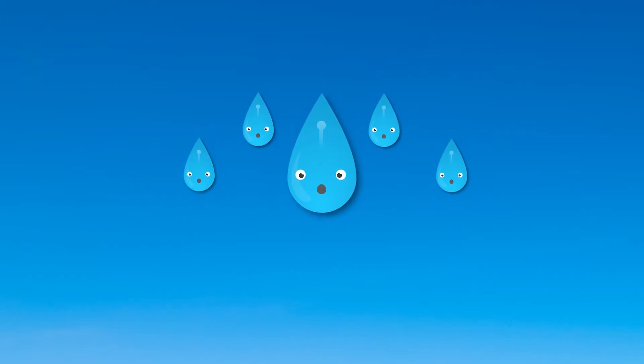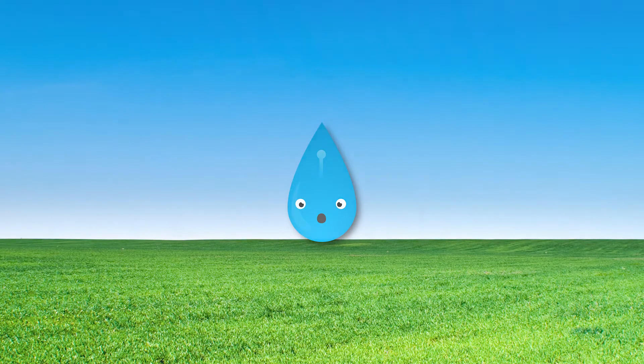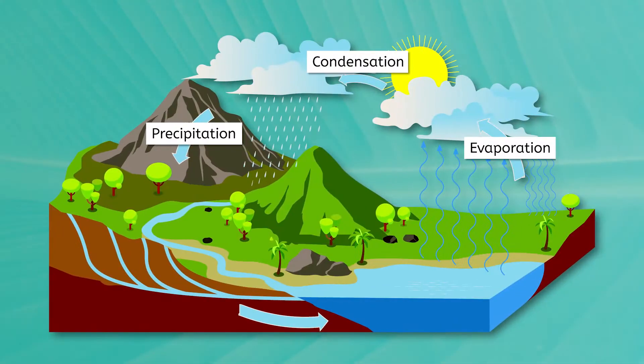First, she'll begin to cool down and join other vapor friends, forming a fluffy cloud. As the cloud becomes heavier, what do you think will happen? Mia, as well as many of her neighbors, may take the plunge back to Earth as a raindrop. These steps in the water cycle are known as condensation and precipitation.